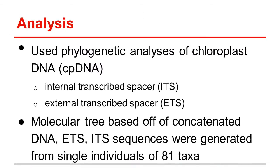They tested this question using a couple of different methods of analysis. First, they used phylogenetic analysis of chloroplast DNA of the Dalechampia vines, including internal transcribed spacers (ITS) and external transcribed spacers. They also created a molecular tree based on concatenated DNA ETS-ITS sequences from single individuals of 81 taxa of the Dalechampia vines.